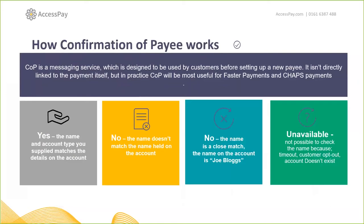So there are four outcomes from a confirmation of payee check: yes (name and account type match), no (they don't match), close match, or unavailable. What's driving this initiative, Rory? It's one of a number of measures developed through the Payment Strategy Forum, now handed to Pay.UK to deliver on behalf of the Payment Systems Regulator. It's really designed to combat authorised push payment fraud — sometimes called APP fraud — and particularly a type called impersonation.